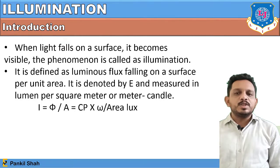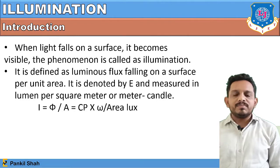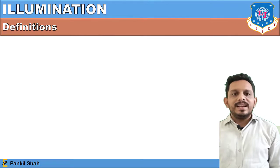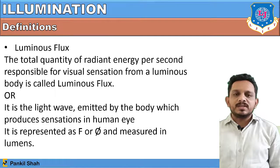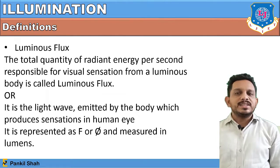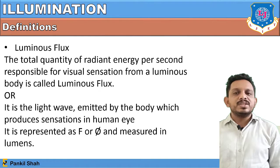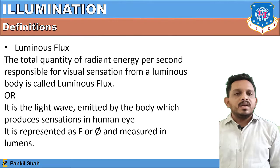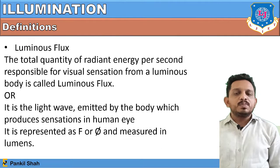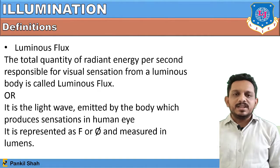Sometimes illumination is also measured in lumens per meter candle. Now let's see luminous flux. Luminous flux is the total quantity of radiant energy per unit second responsible for visual sensation from a luminous body. It is also defined as the light wave emitted by a body which produces sensation in the human eye. Luminous flux is represented by F or φ and is always measured in lumens.